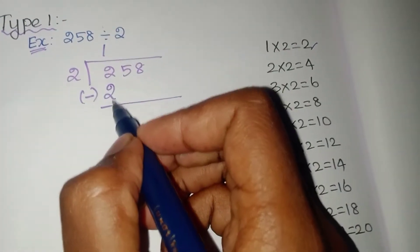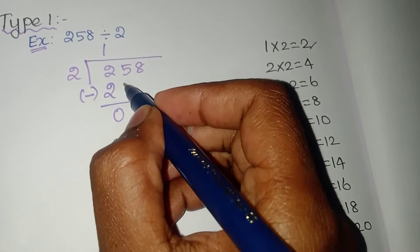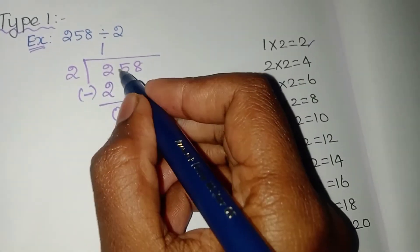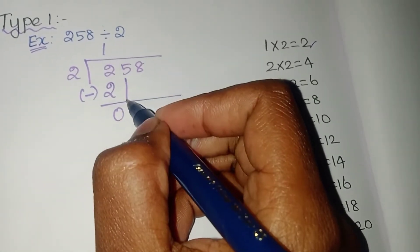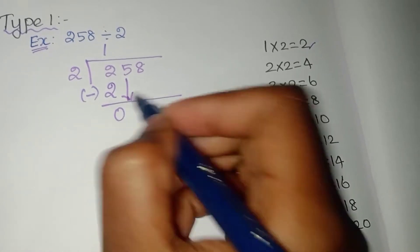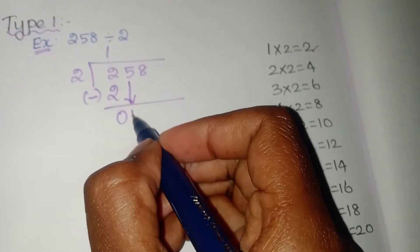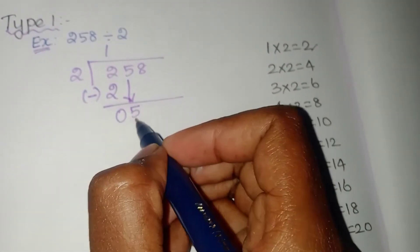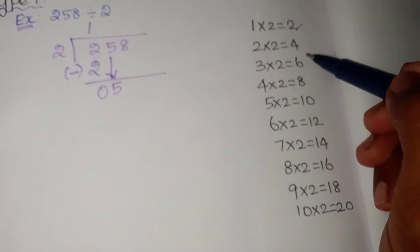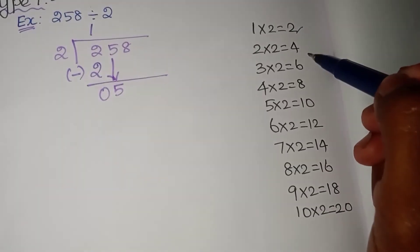This is the next step. You have to bring down the second digit. So you have to write 5 here. Now check the second table to see if 5 will come.